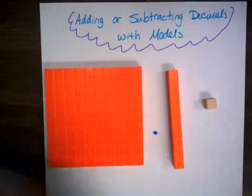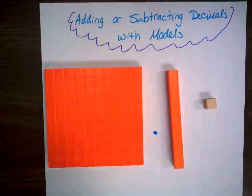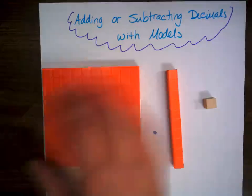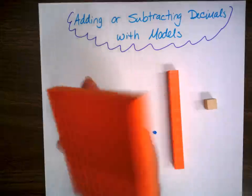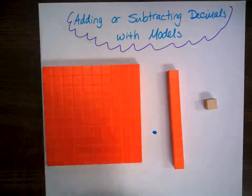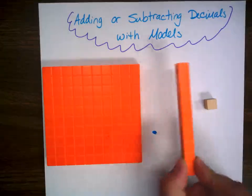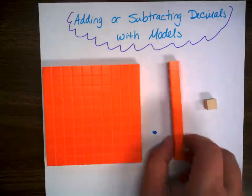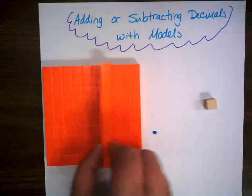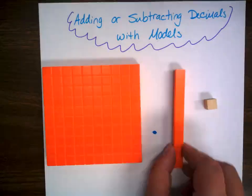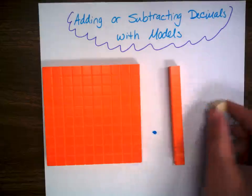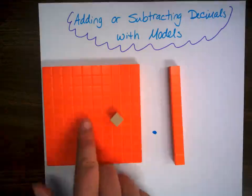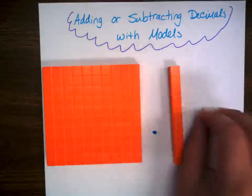Now how we think about these numbers has changed. This right here is now our whole number — it's worth one. This is going to be our tenth, because it takes ten tenths to create a whole. If you put ten of these together, it equals one whole. And here's our hundredth piece, because it takes a hundred of these to create the one whole.